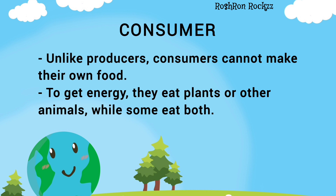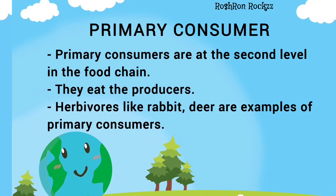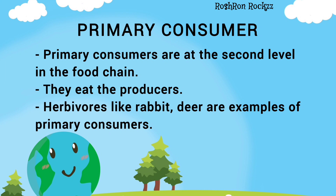Unlike producers, consumers cannot make their own food. To get energy, they eat plants or other animals, while some eat both. Primary consumers are at the second level in the food chain.